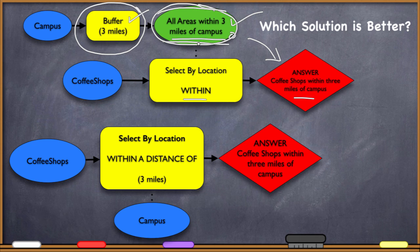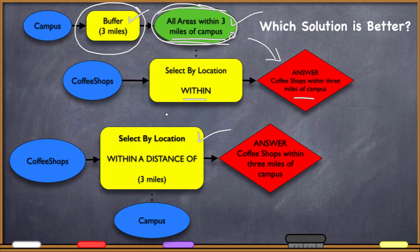What happens to that intermediate buffer file when you're done? You might notice we don't really care about it — we only created it to get to the final answer. Maybe you don't want a data file sitting on your hard drive taking up space. Do you need to go back and delete it? If you're on a portable drive in a computer lab, maybe you don't want it. In this circumstance, Solution 2 is more efficient — less time to run and no unwanted intermediate file.